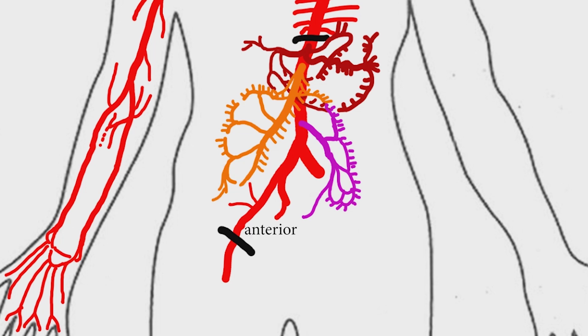Internal iliac artery divides into anterior and posterior division. Posterior division gives rise to iliolumbar artery, lateral sacral artery, and superior gluteal artery.